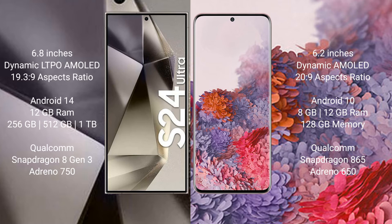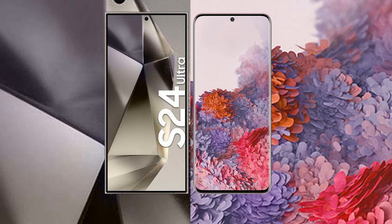Samsung Galaxy S24 Ultra comes with 12GB RAM and 256GB, 512GB, or 1TB internal storage, Qualcomm Snapdragon 8 Gen 3 processor, and Adreno 750 GPU. Samsung Galaxy S20 comes with 8GB or 12GB RAM and 128GB internal storage, Qualcomm Snapdragon 865 processor, and Adreno 650 GPU.